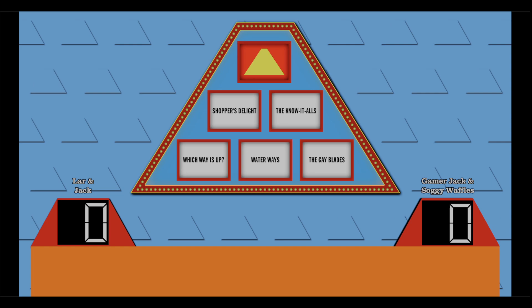So just look at another screen. Look at your own screen. Yeah, I will. All right, Gamer Jack, pick one. We have Shoppers Alight, Know-It-Alls, Which Way Is Up, Waterways, and The Gay Blades. The Gay Blades. I figured you would pick that one. These are things that have a blade. Wait, are you still seeing? You don't stop seeing my screen.